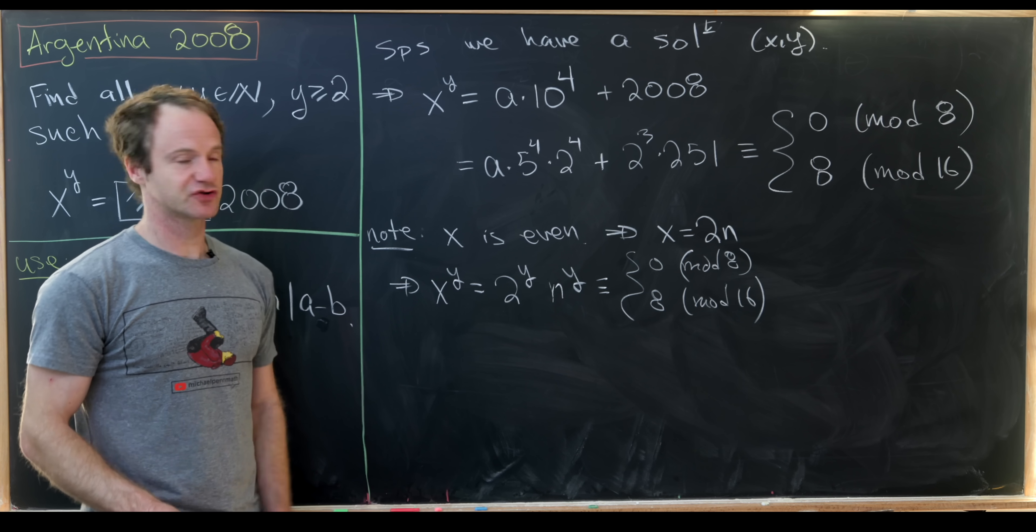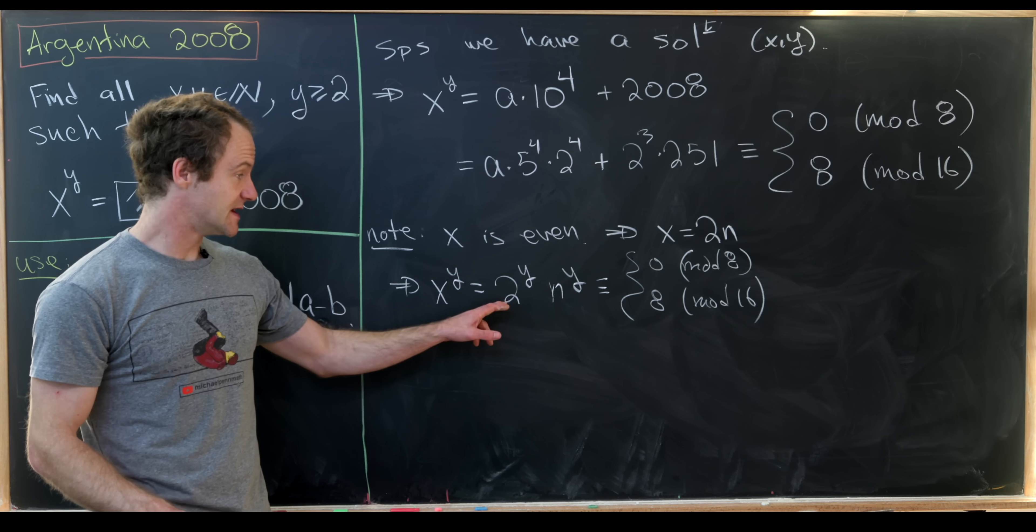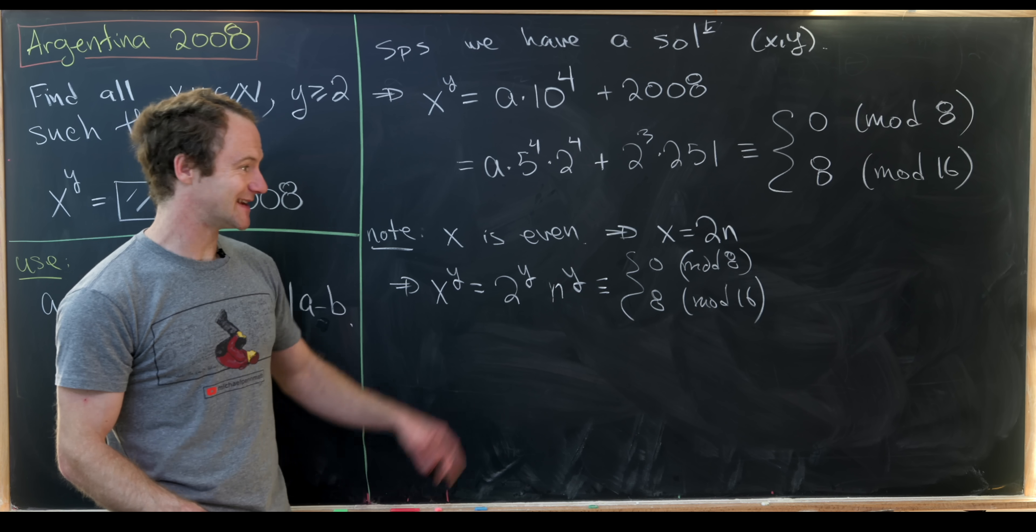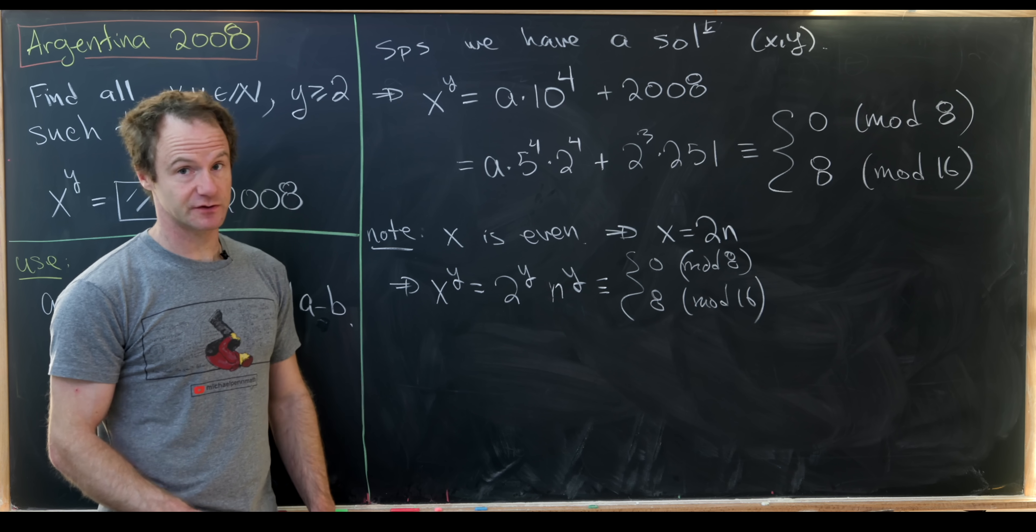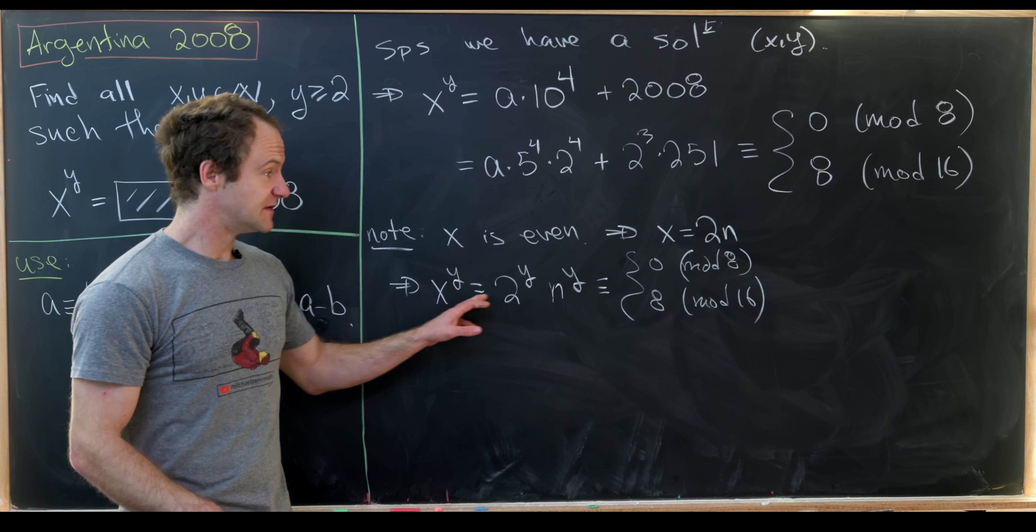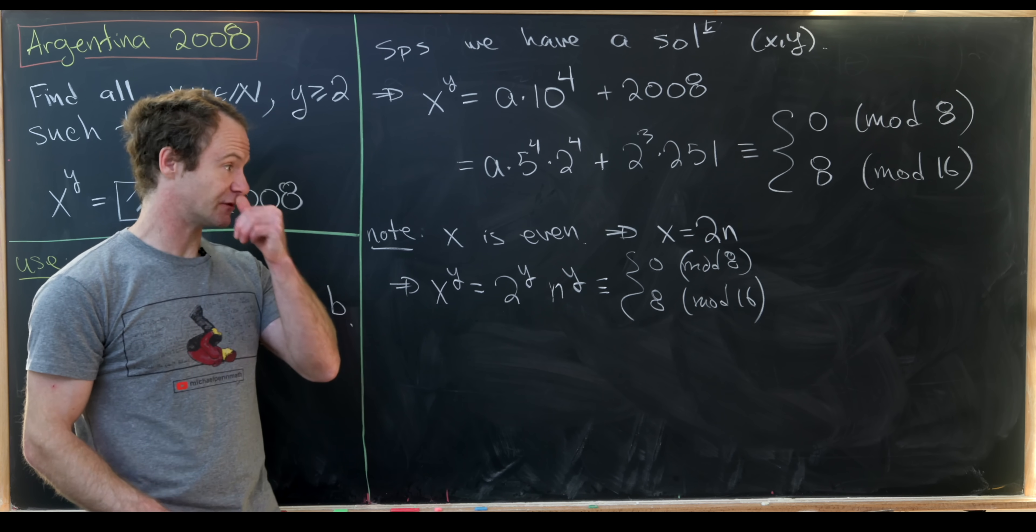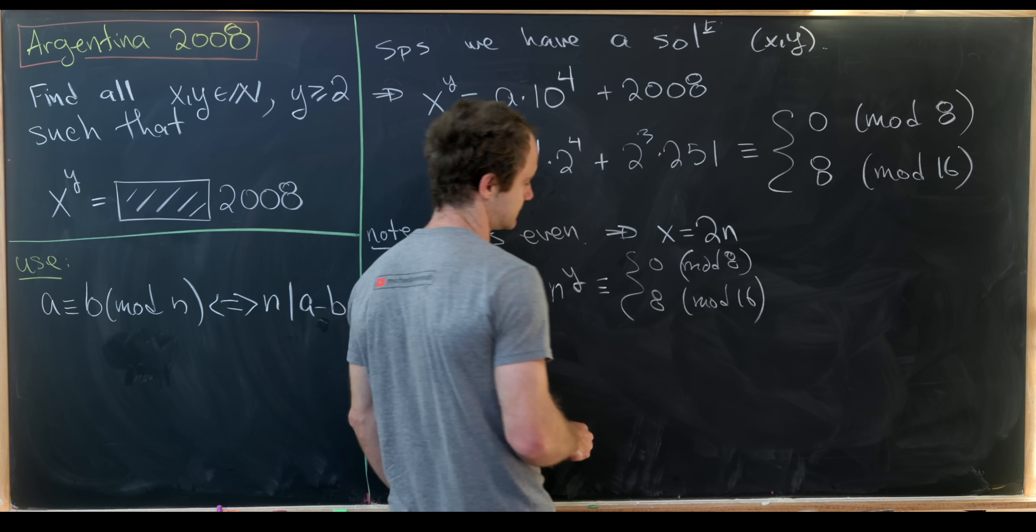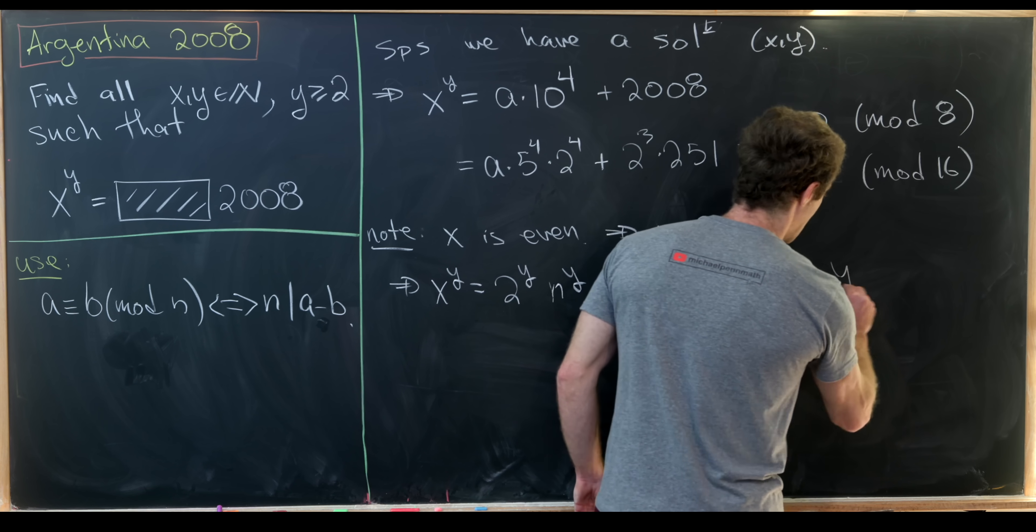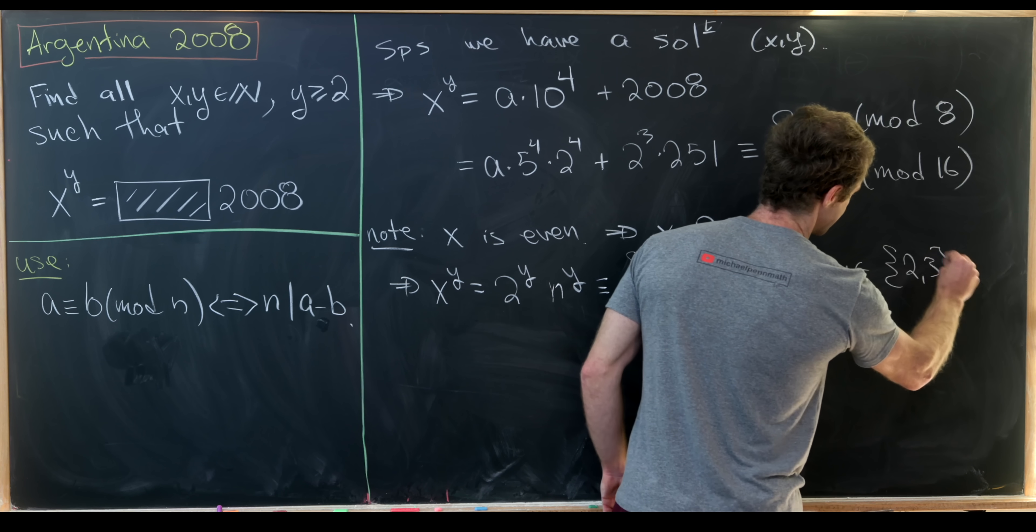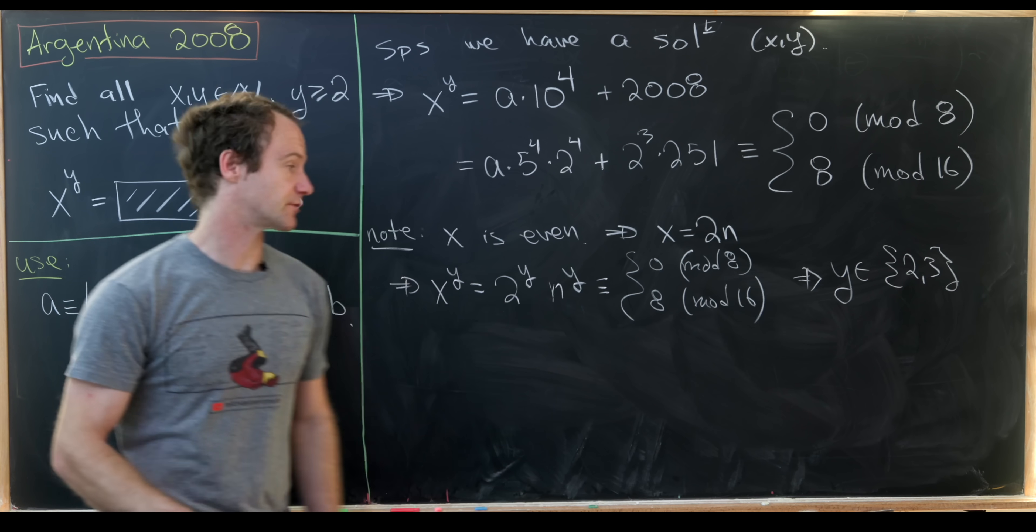But that restricts the values of y because we've got a 2 to the y here. Notice y cannot be bigger than or equal to 4 because if y is bigger than or equal to 4 then this thing is automatically 0 mod 16. So that means y comes from the set 2 or 3.